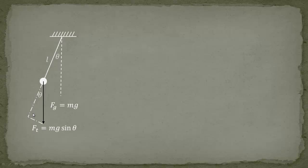Looking at the system in more detail, we see there is an angle theta, and the gravitational force can be divided into a radial component and a tangential component. The radial force is just pulling on the rope, producing tension — nothing else. The only component that actually causes acceleration is the tangential force. Because the radius and tangential direction are always 90 degrees to each other, we can use sine to find the tangential force: Ft equals m times g times sine theta.